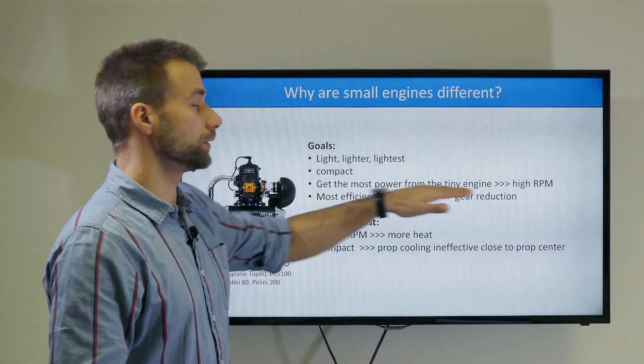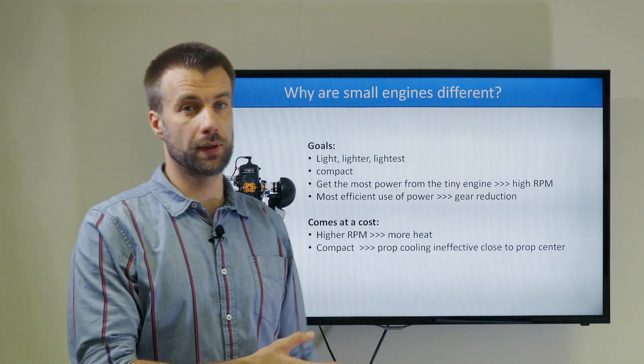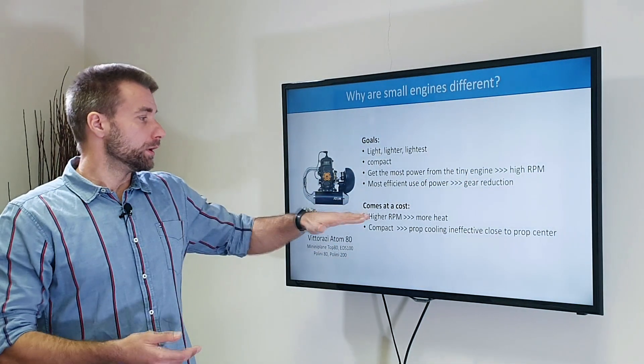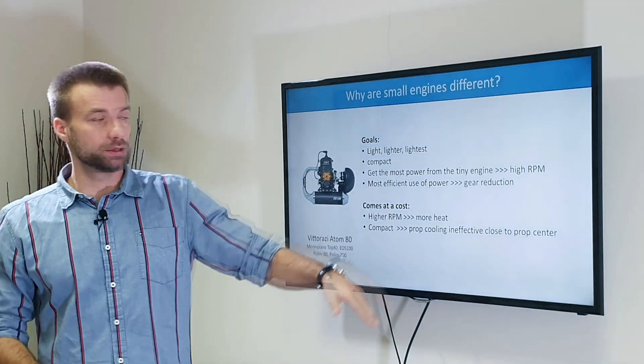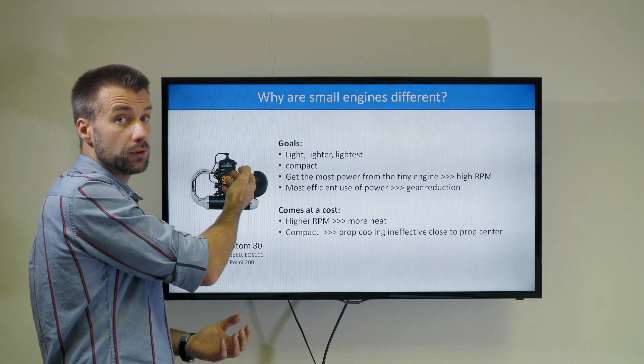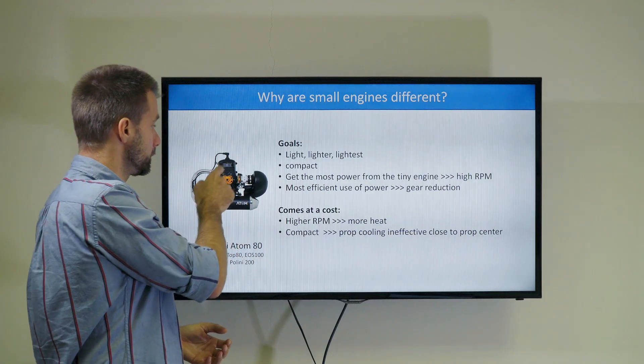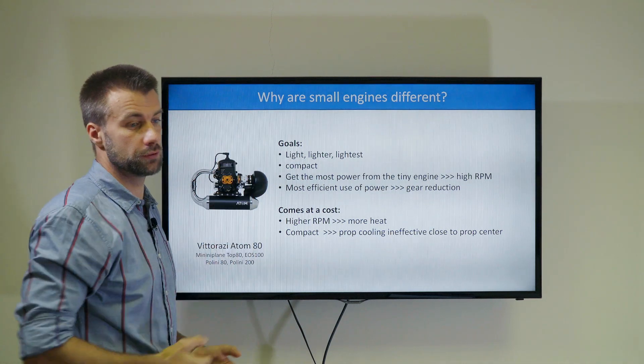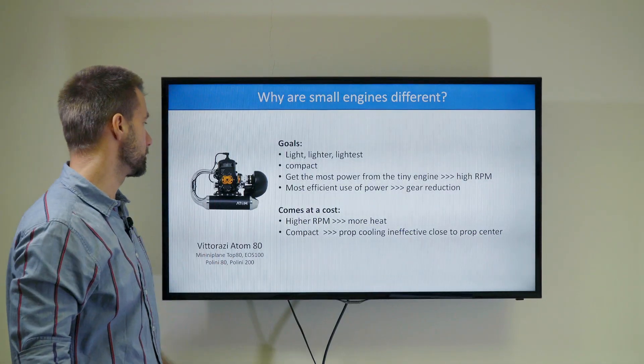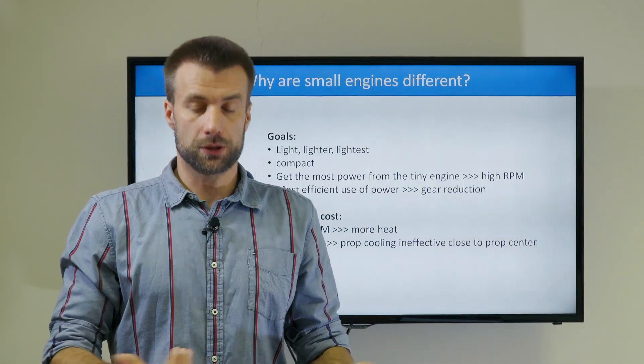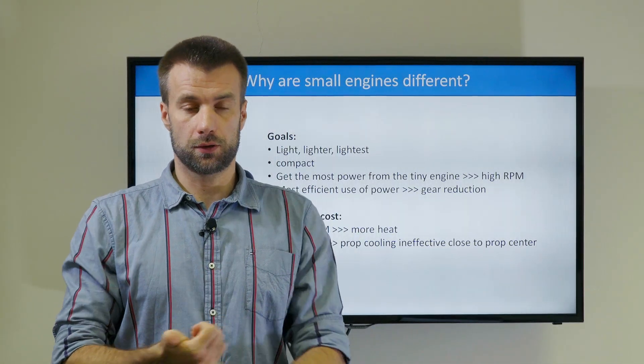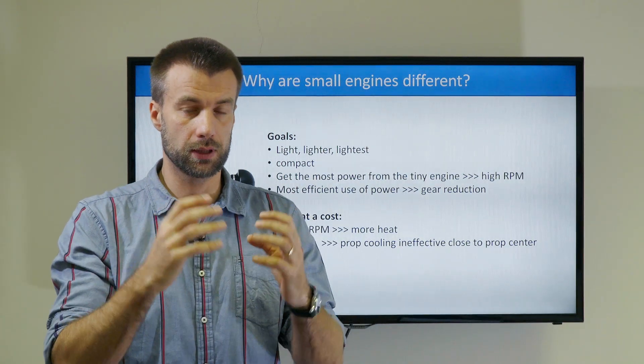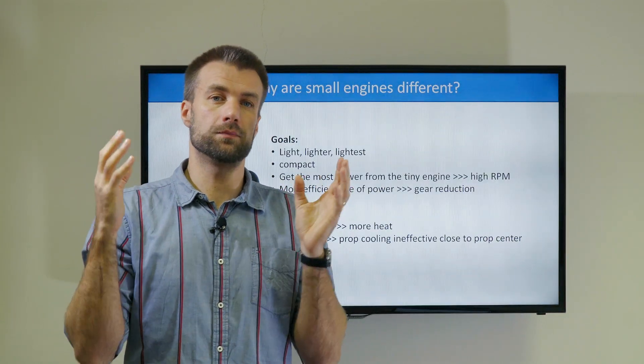That's why they rely on high RPM. As they want to squeeze the most power, they rely on gear reduction instead of belt reduction because gear reduction is a bit more efficient. Now it comes at a cost. Higher RPM generates more heat. In this area, the prop cooling wouldn't be sucking enough air because it's just way too close. The further you go from the center of the prop, the more airflow you generate, and then it decreases at the tips. These are the implications for small engines: you get a bit more heat because of high RPM and you don't get enough airflow generated by the prop because you're very close to the center of the propeller.